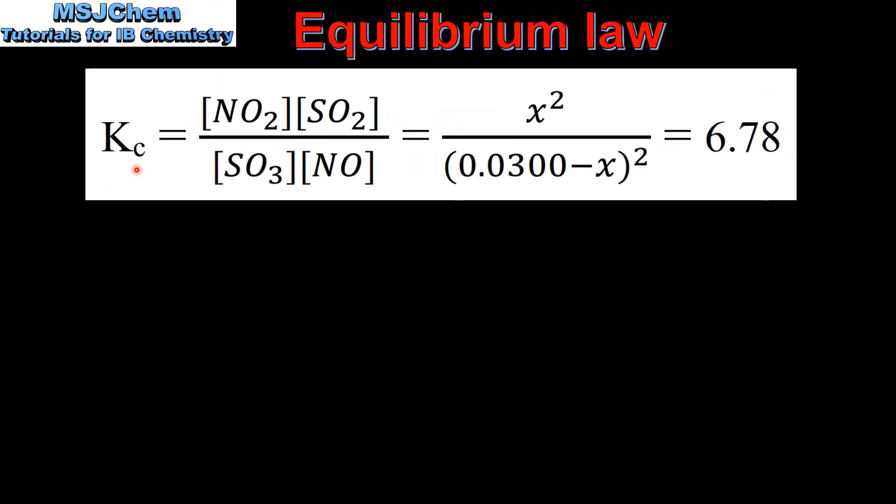Next we write our equilibrium expression with the products in the numerator and the reactants in the denominator. The concentration of the products were both X so when we multiply them together we get X squared, and when we multiply the concentrations of the reactants together we get 0.0300 minus X squared, and that equals the equilibrium constant which is 6.78.